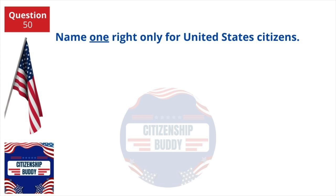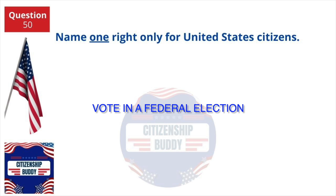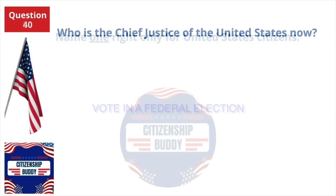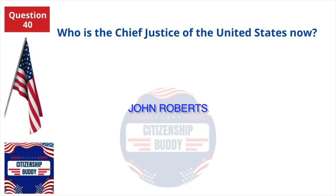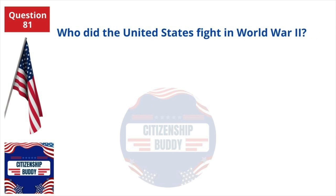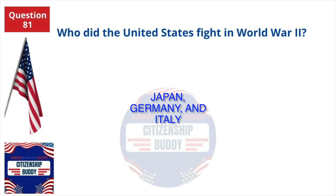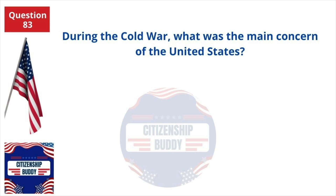Name one right only for United States citizens. Vote in a federal election. Who is the Chief Justice of the United States now? John Roberts. Who did the United States fight in World War II? Japan, Germany, and Italy. During the Cold War, what was the main concern of the United States? Communism.